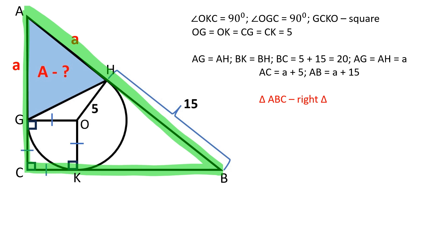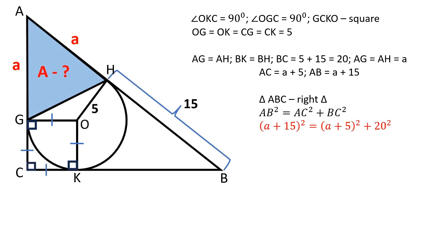Triangle ABC is a right triangle. By the Pythagorean theorem, AB squared is equal to AC squared plus BC squared. Let's substitute in our variables and after expanding both sides and simplifying the equation, we are left with A is equal to 10.